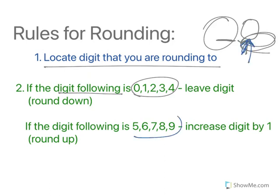If the digit following is 5 or greater, then this digit goes up by 1. We call that rounding up. And again, everything after that is 0.